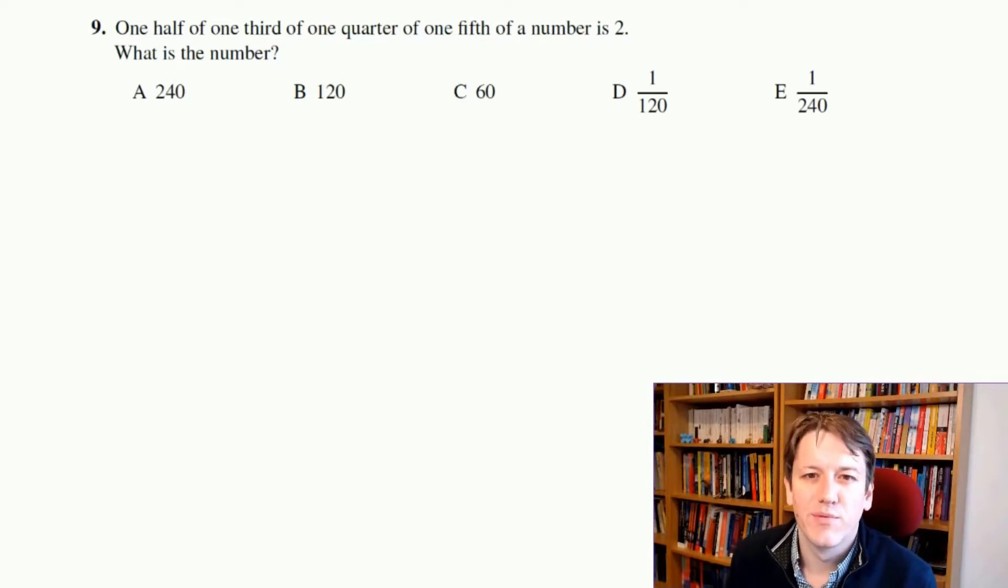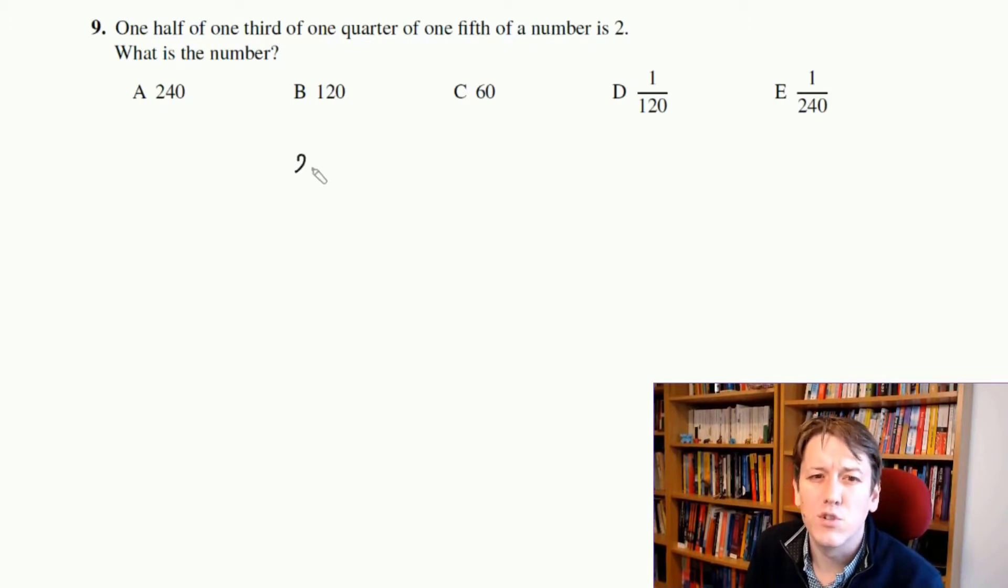One half of one third of one quarter of one fifth of a number is 2. What is the number? Well, it's awkwardly phrased, but it's not a terribly difficult question. We've got to work back from 2 here. So if one fifth of a number is 2, then that number must be 2 times 5, or 10, right? And then if one quarter of one fifth of a number is 2, well, that's saying one quarter of the number is 10 then, so I need to multiply by 4 as well. So I do 2 times 5 times 4.